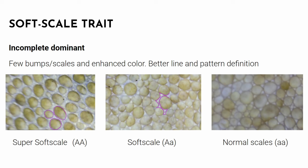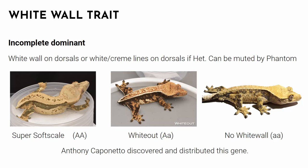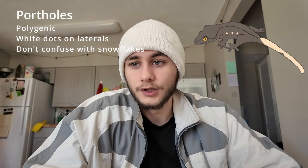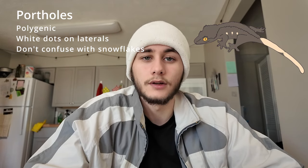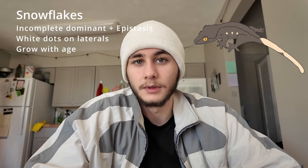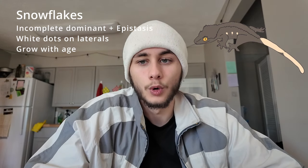Soft scale is incomplete dominant — we see fewer bumps or scales on the skin, enhanced color, and cleaner lines. White wall is an incomplete dominant gene that creates a solid white wall on the lateral sides of the crested gecko. Portholes is a polygenic gene creating white spots on the sides and sometimes legs of the crested gecko — do not confuse this with snowflakes. Snowflakes is incomplete dominant or possibly epistatic (meaning you need another gene for it to express), creating white spots similar to portholes but that grow with age. Drippy is tied to snowflakes, is polygenic, and creates white-colored dorsals — most common on harlequins, tricolors, pinstripes, and lily whites.